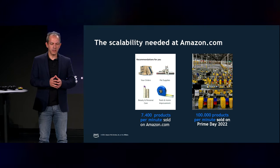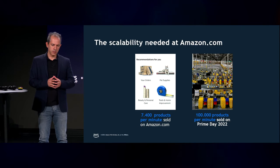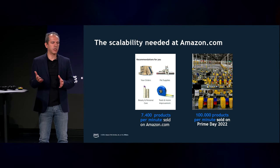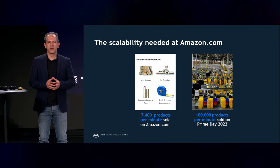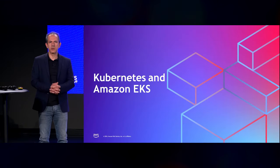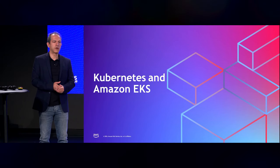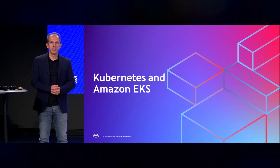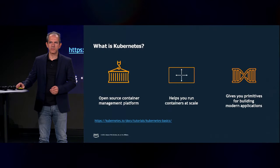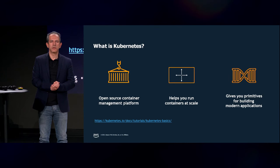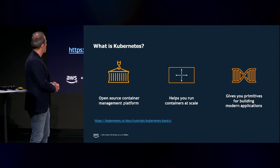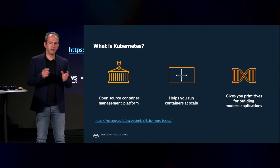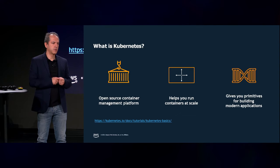They run a lot of infrastructure behind the scenes to deliver and transport packages. They solve this challenge using Kubernetes and Amazon EKS. They have over 100,000 microservices that they scale from one way to the next — Kubernetes is simply what they use.